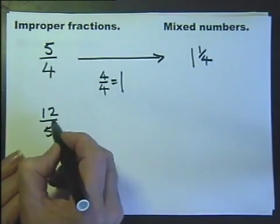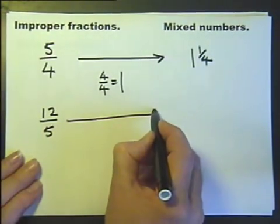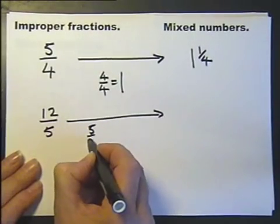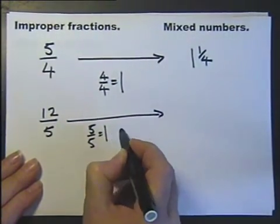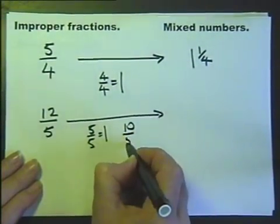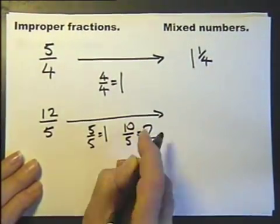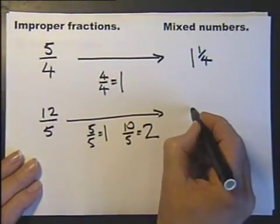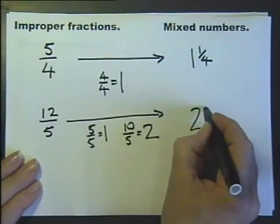This is saying 12 fifths. Now 5 fifths would be 1. 10 fifths would be 2. So 12 fifths must be 2 and 2 fifths.